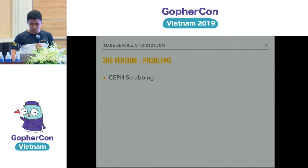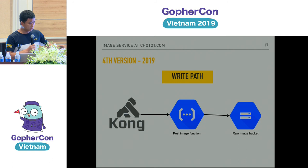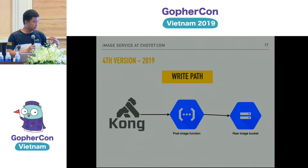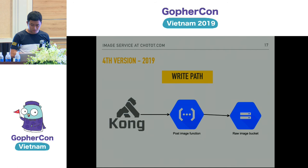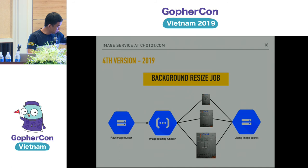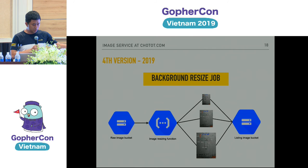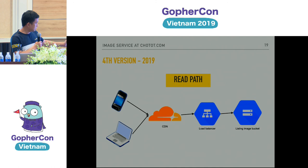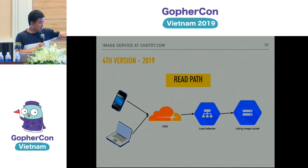This is the final version. We split it into three paths. First is the write path: we have an API Gateway and a Cloud Function which receives the image, does the checking, resizing, converts it to a standard size, and stores it in a Google Cloud Storage bucket. On the client side it returns quickly — that's why it's so fast. Then there's the background job: it generates a lot of different sizes for listings, images, and avatars and stores them in another bucket. For the read path, every time you want to read an image you go to the CDN first, then to the load balancer to get the already-resized image. We don't do on-demand resizing — all images are pre-stored, so it's really fast.